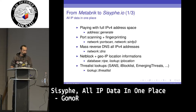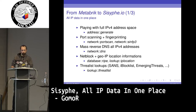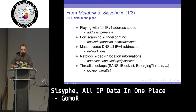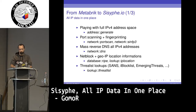This is possible thanks to the Metabricks network port scan and network SFP bricks. I also performed mass reverse DNS scanning of all IPv4 addresses using the network DNS brick — it takes around two months to complete a full reverse DNS scan of all IPv4 addresses without being blacklisted by your provider. I also gather netblock and geo IP location information using the RIPE database and IP location bricks, and I look up whether an IP address is listed as a threat by publicly accessible threat lists like SANS blocklist and Emerging Threats.